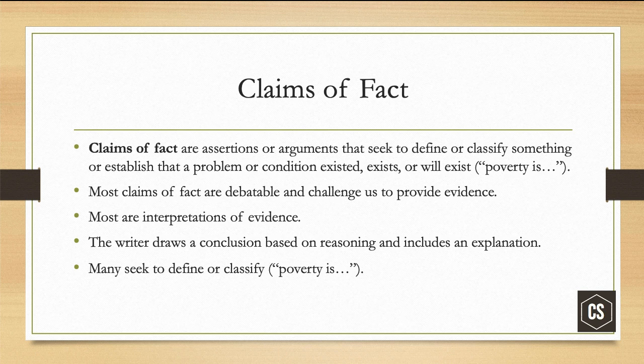The writer draws a conclusion based on reasoning and includes an explanation — because your reader does not think the way you think. If you want to convince them, you have to show that on the page through evidence and explanation of what that evidence means. A claim of fact might seek to define or classify, such as 'poverty is.' That's what your next paper is going to be: an argument of definition, where you pick a word or concept to define as a claim of fact.